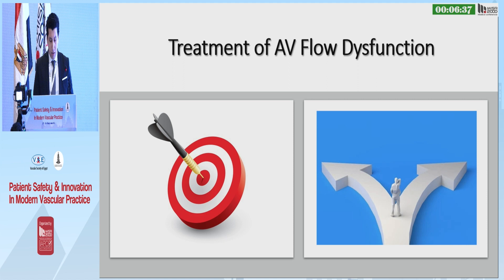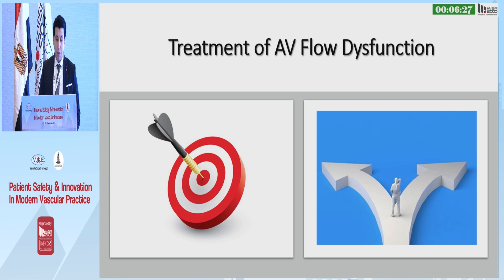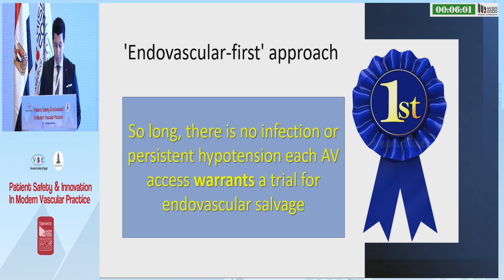When we discuss treatment, we should consider two issues. The first is the target: efficient dialysis, limb viability and usability, safe life, and better quality of life. The second issue is the treatment modalities: open approach or endovascular approach. However, we can use a hybrid approach as in complicated venous aneurysm and thrombus load. The concept of endovascular approach is that, so long as there is no infection or persistent hypotension, each AV access warrants a trial for endovascular salvage.